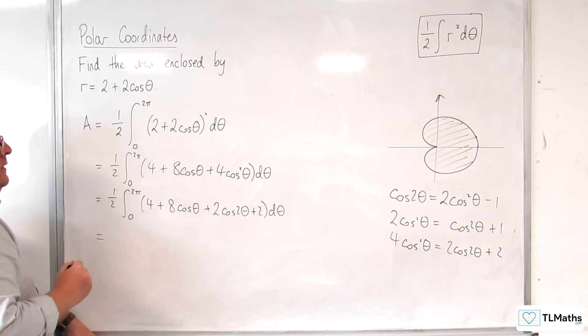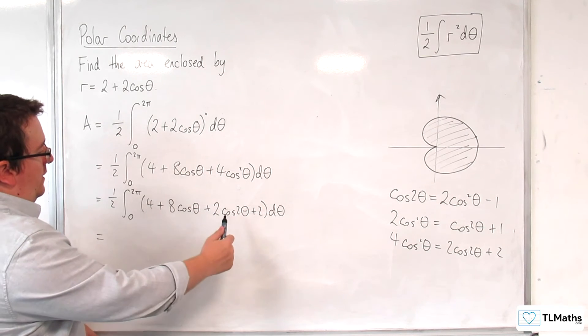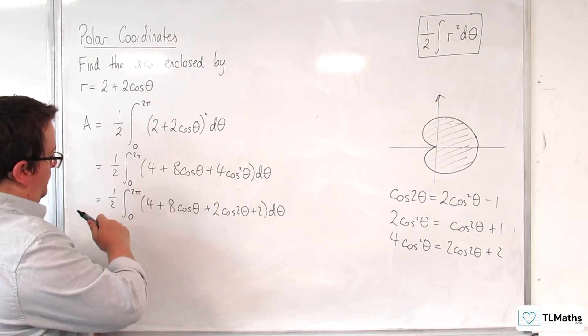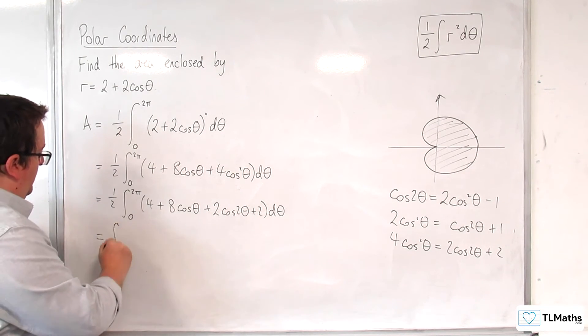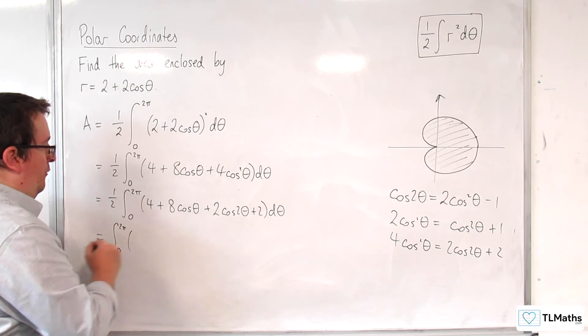So let's simplify this. So what we can do is we can factor out the 2, and that's going to knock out the half. So we have the integral between 0 and 2 pi of...